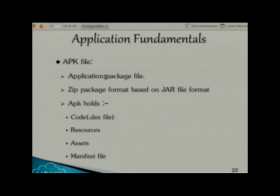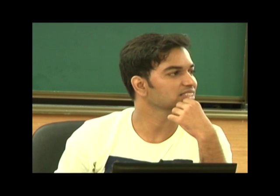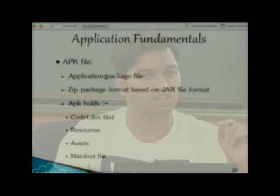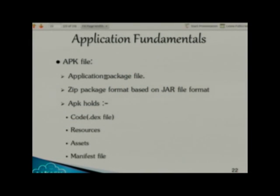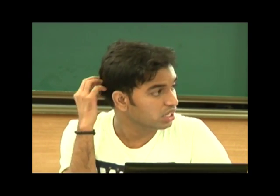What is the manifest file? The manifest file defines your application properties. For example, if my application needs to open the camera, I need to give the permission in the manifest file so the kernel will understand that this application requires camera access. Similarly, if I want to use the internet, I also need to give permission in the manifest file. The manifest file is a very important file in every Android project.